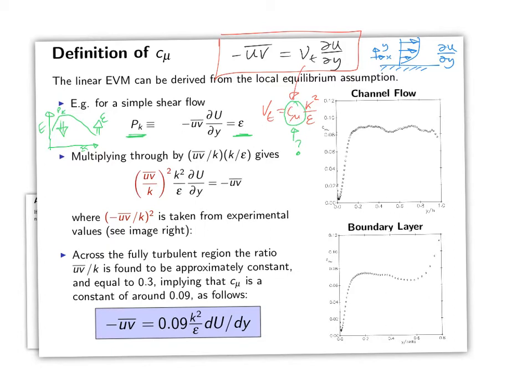In that situation we can start the process of approximating C_mu. So we start by saying P_k which is equal exactly to -uv times du/dy is equal to dissipation epsilon. The next step is that we multiply through the equation by this quantity here, which is just used for convenience, and we get this. This is useful because there's a direct mapping of the terms, so here we have minus uv is equal to K squared over epsilon times du/dy. And then the constant C_mu can then be somehow linked to the quantity (uv/k)^2.